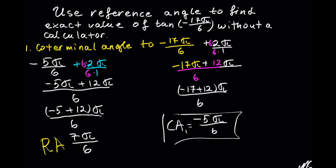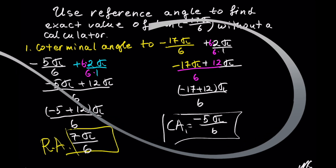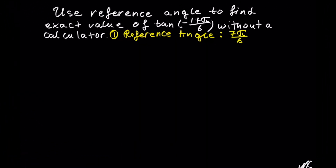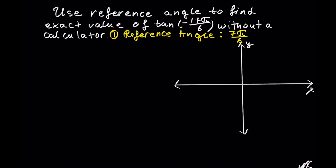So our coterminal angle is 7 pi out of 6. Once we have the coterminal angle, let's sketch it on the x and y axis. In radians, we have 0 radians here, 1 pi is here, and 7 pi out of 6 — the denominator is 6 — so we need to divide 1 pi into 6 equal pieces. It's already divided by the y axis, and we have pi out of 2 over here, which is equivalent to 90 degrees, a right angle. So let's divide each half into 3 pieces.